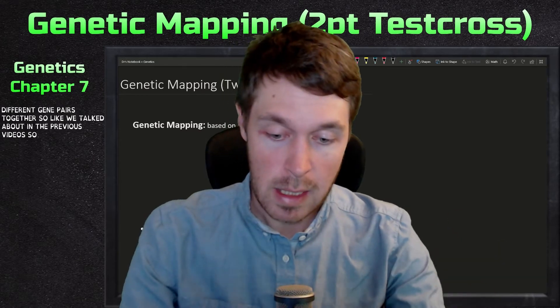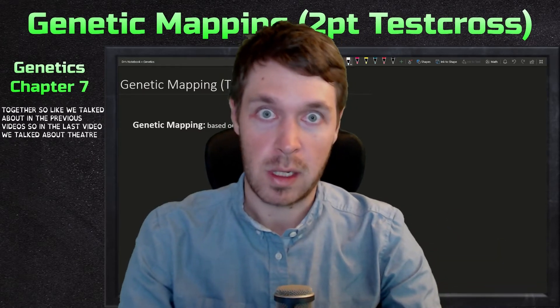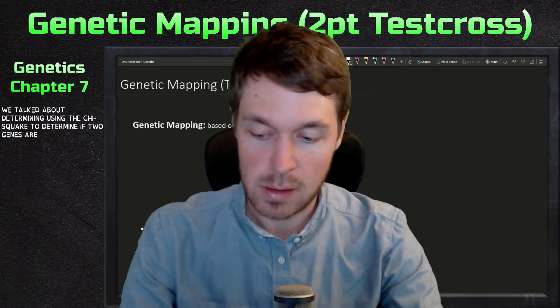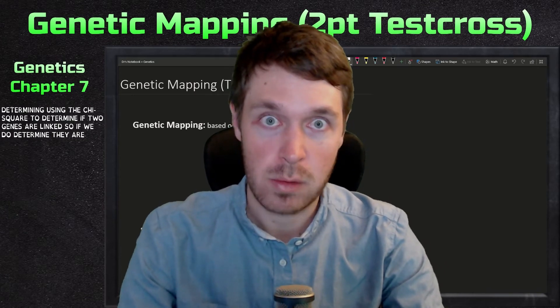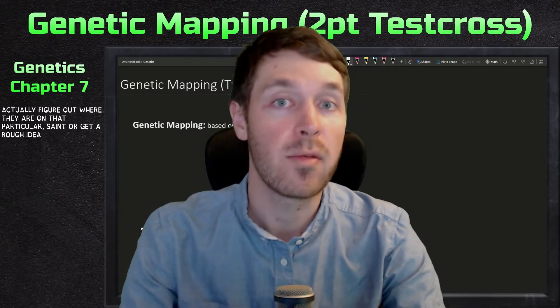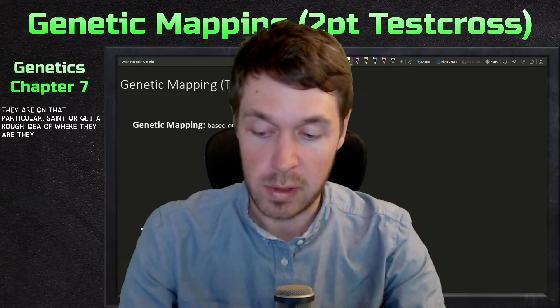In the last video, we talked about determining using the chi square to determine if two genes are linked. So if we do determine they are linked, what now? We can actually figure out where they are on that particular chromosome or get a rough idea of where they are based on doing some crosses.